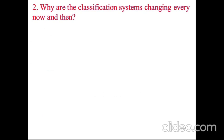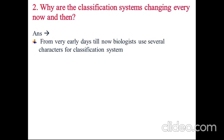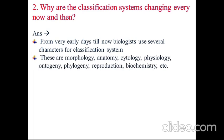Why are the classification systems changing every now and then? From very early days till now, biologists use several characters for classification systems. These are morphology, anatomy, cytology, physiology, ontogeny, phylogeny, reproduction, biochemistry, etc.